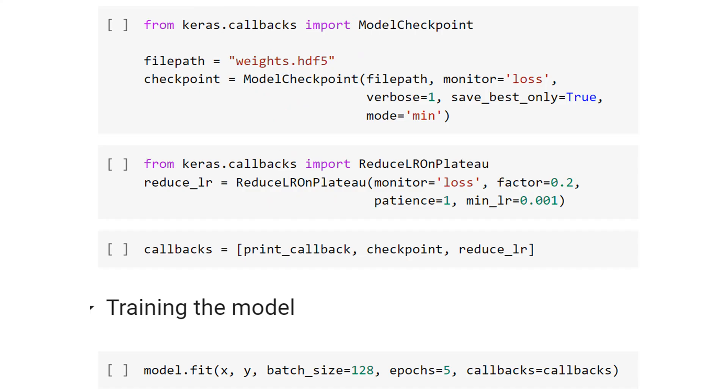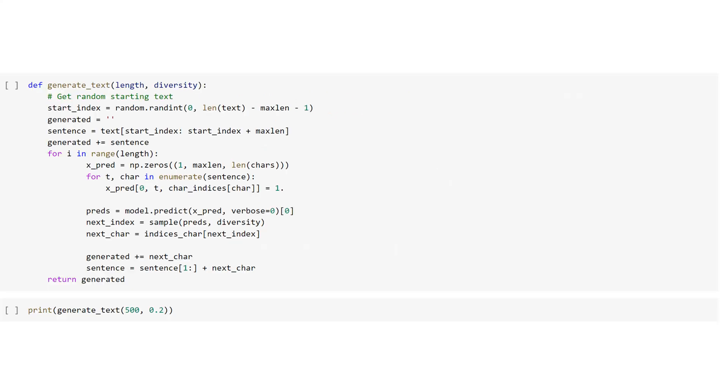So now we're finally going to train the model and do the following commands. And once we've done this, our last step is just to make this function called generate text, which will be able to generate our speech.